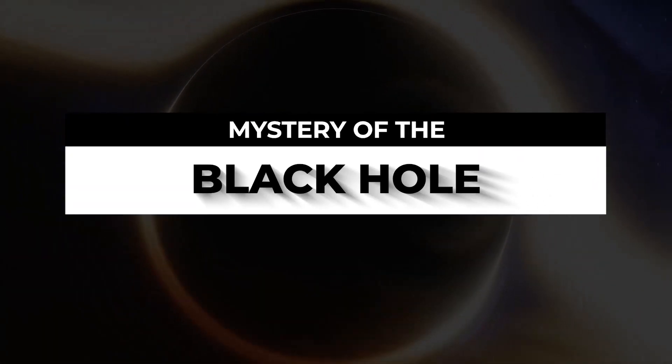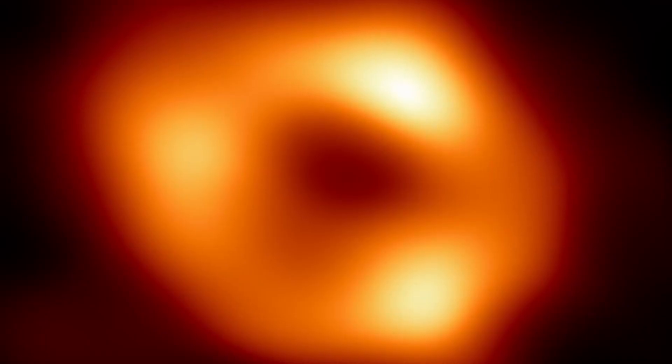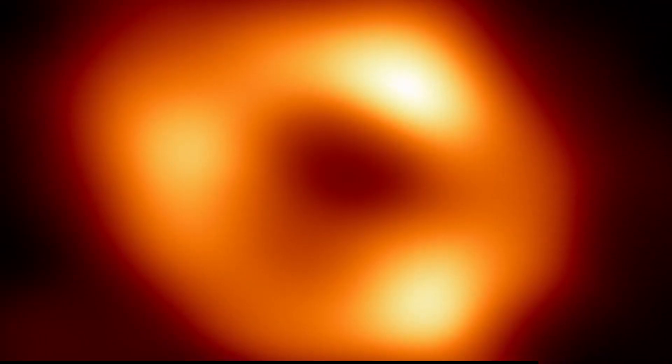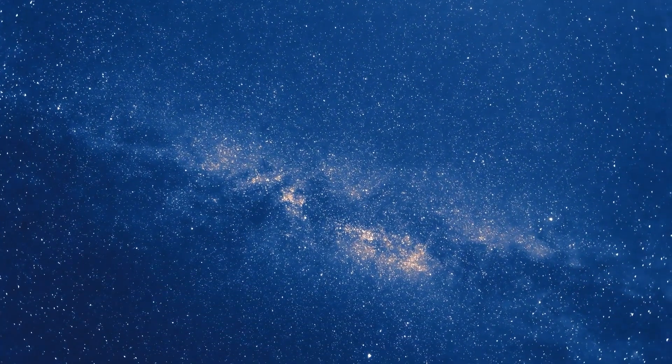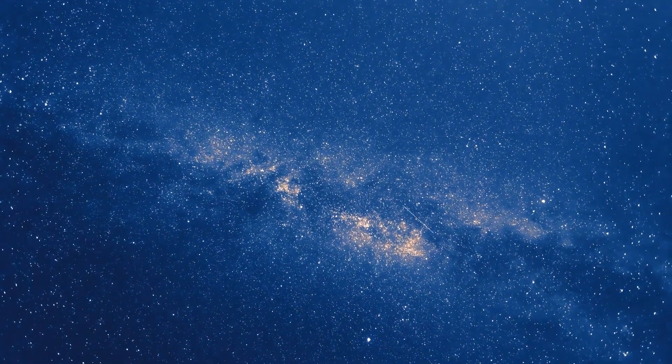Mystery of the black hole. The supermassive black hole in the Milky Way, commonly called Sagittarius A, is surrounded by a disk of gas and dust, some of which will inevitably fall into the black hole.